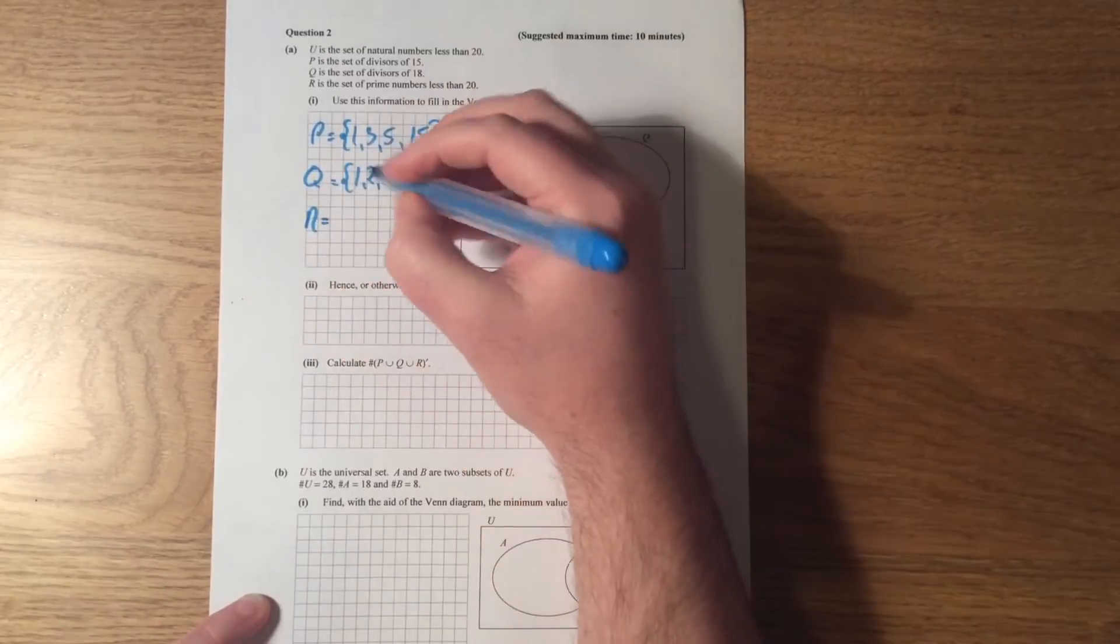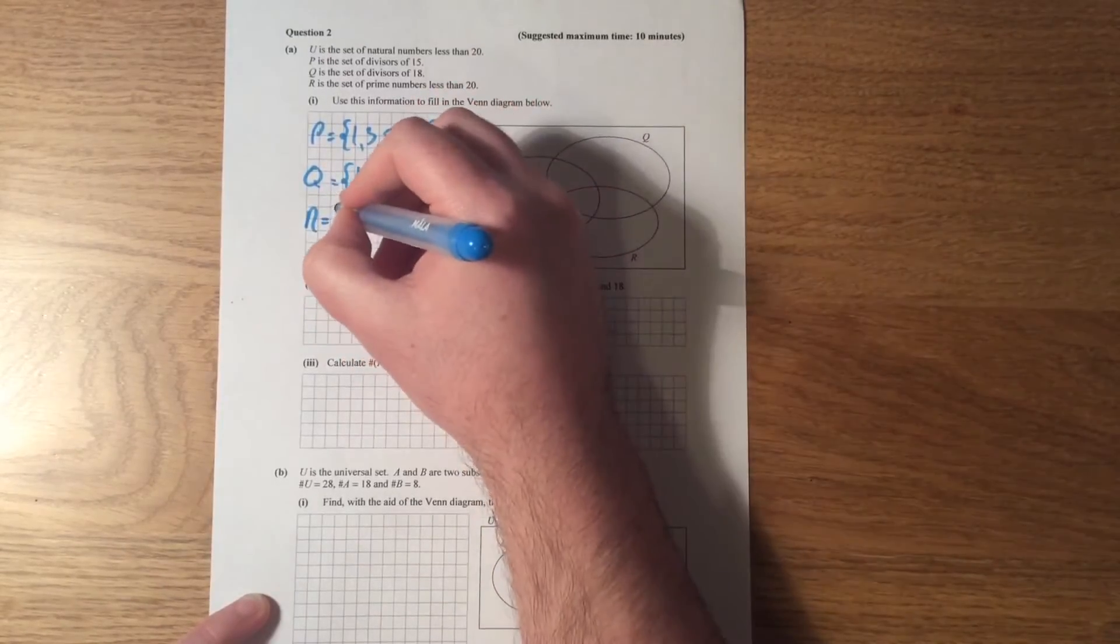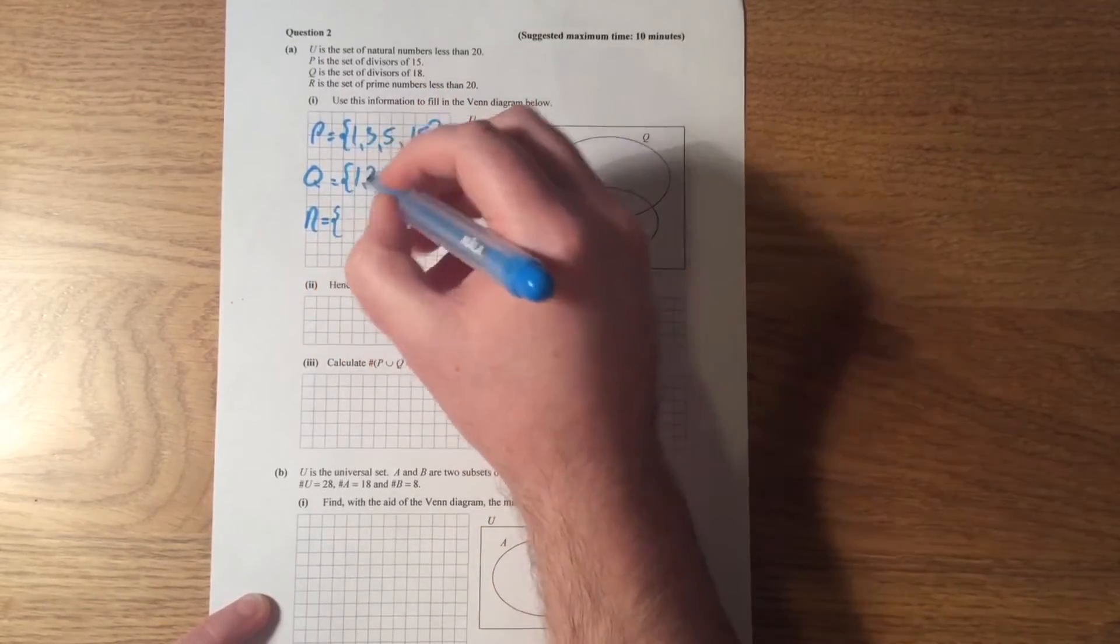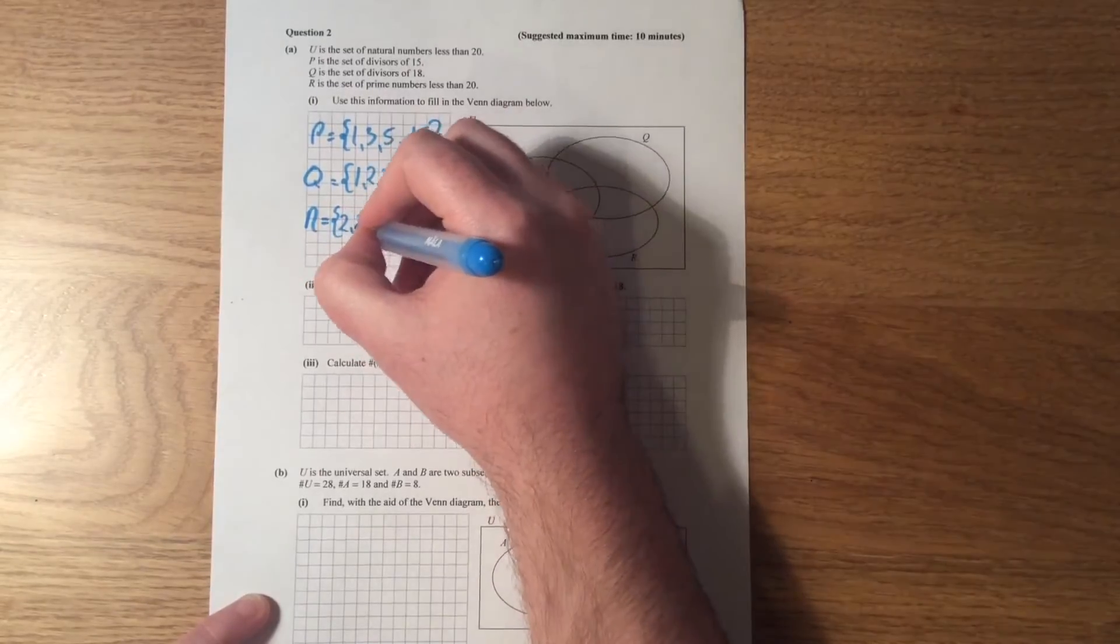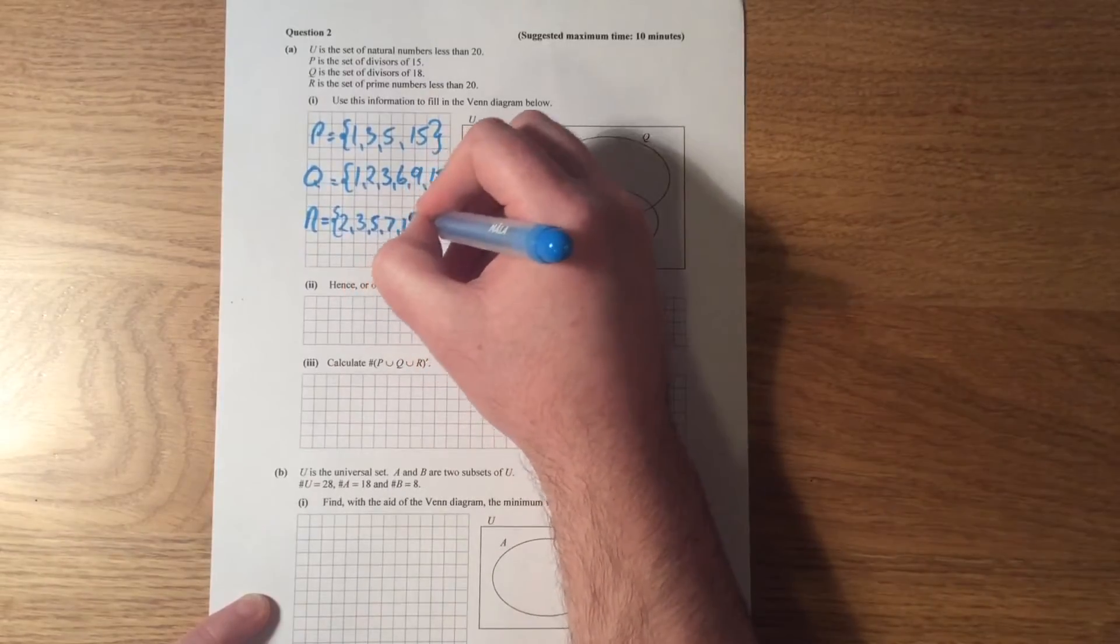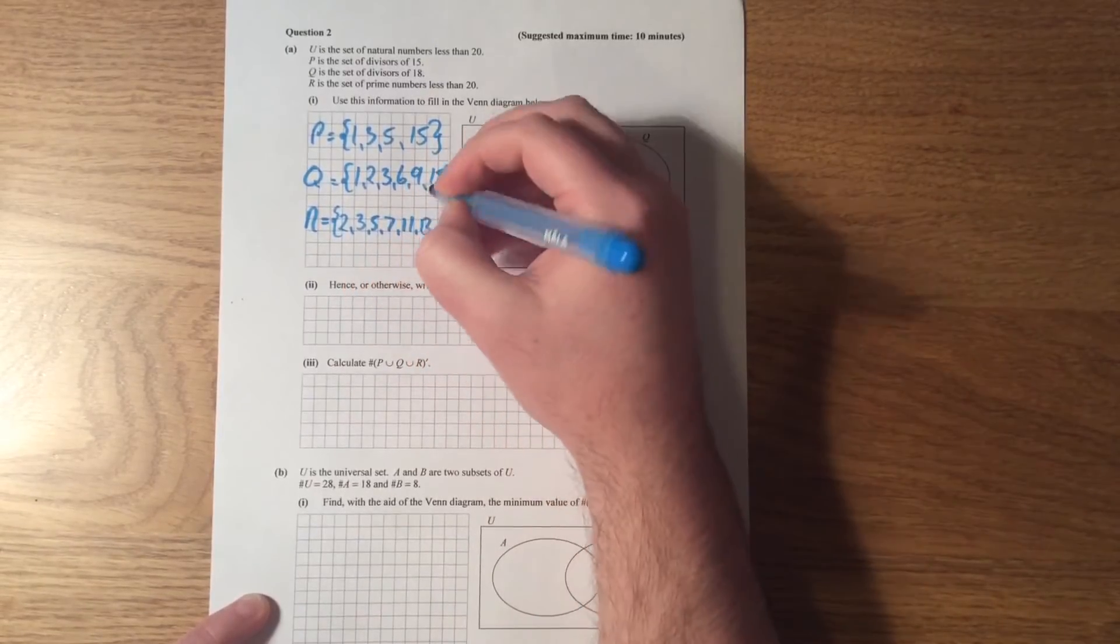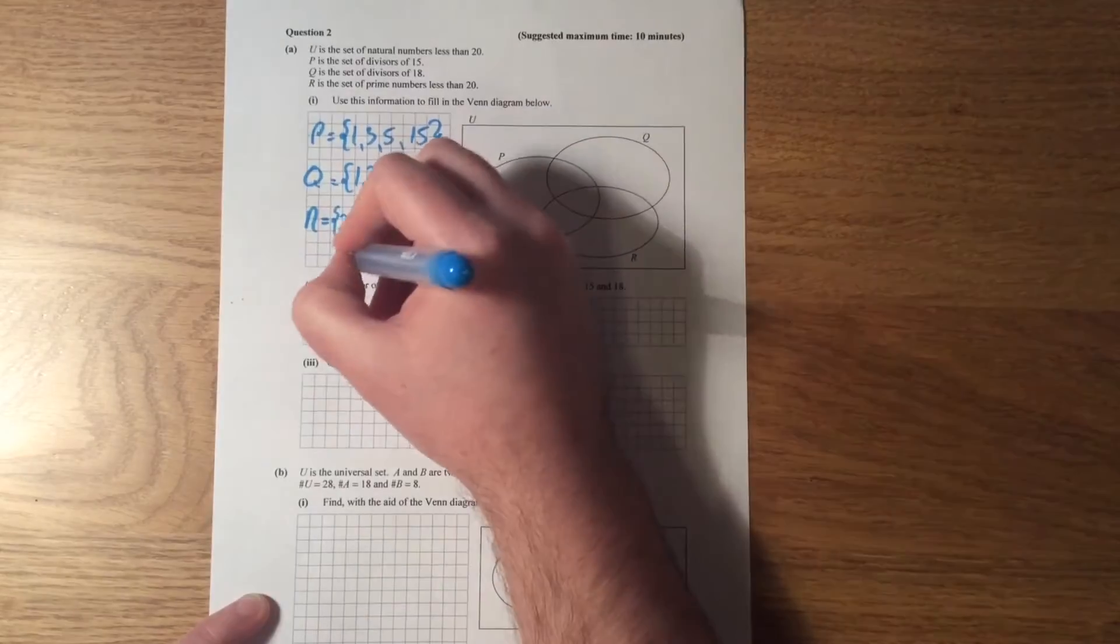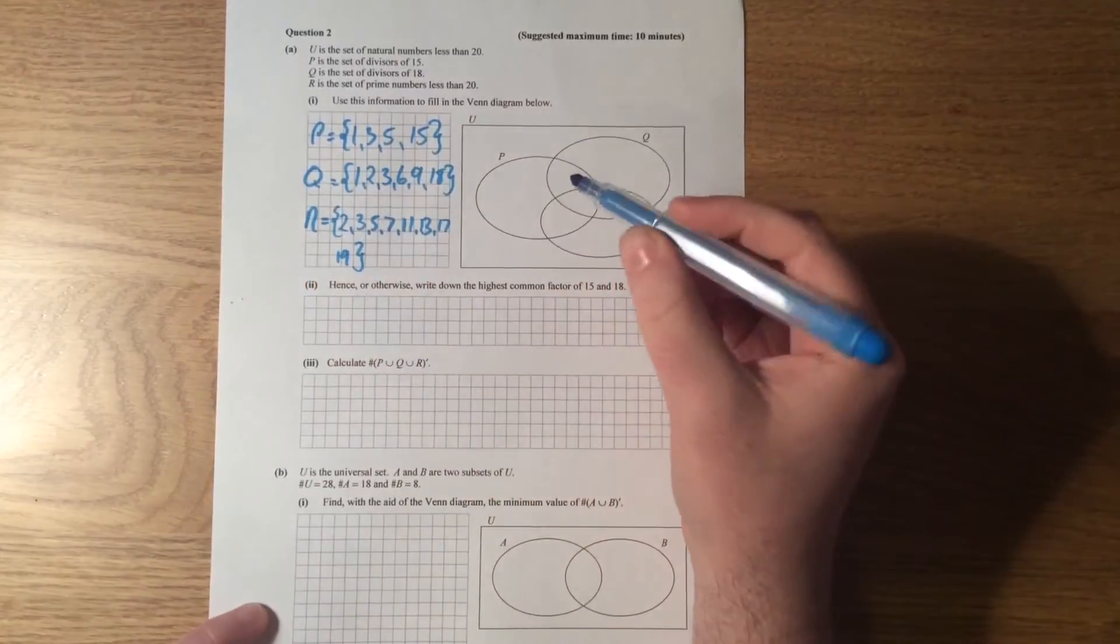And R is the set of prime numbers less than 20, so there's a few of them. Remember, one is not a prime number: 2, 3, 5, 7, 11, 13, 17, and 19. Okay, so they're the elements that I have to deal with.